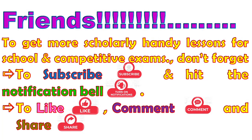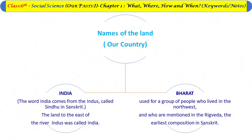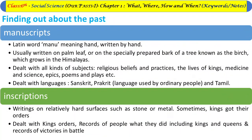The fourth topic is names of the land. Our country is also known as India or Bharat. The word 'India' comes from the Indus river, called 'Sindhu' in Sanskrit. The land to the east of the river Indus was called India. 'Bharat' was used for a group of people who lived in the northwest and who are mentioned in the Rigveda — the earliest composition in Sanskrit.